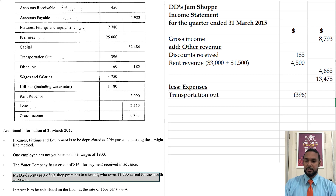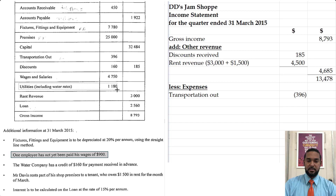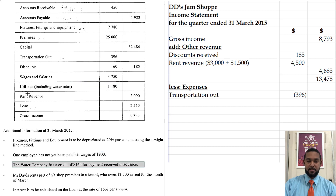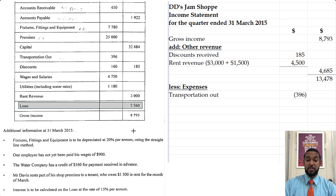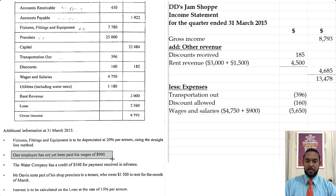Now we're going to deal with the expenses. Transportation out is the first item, followed by discounts allowed. We have wages and salaries — don't forget we have one employee with accrued wages to add. Then utilities including water rates of 1180, but don't forget we have to subtract the prepayment. And we have interest on the loan and depreciation, which we'll have to adjust because it's only for a quarter of a year.